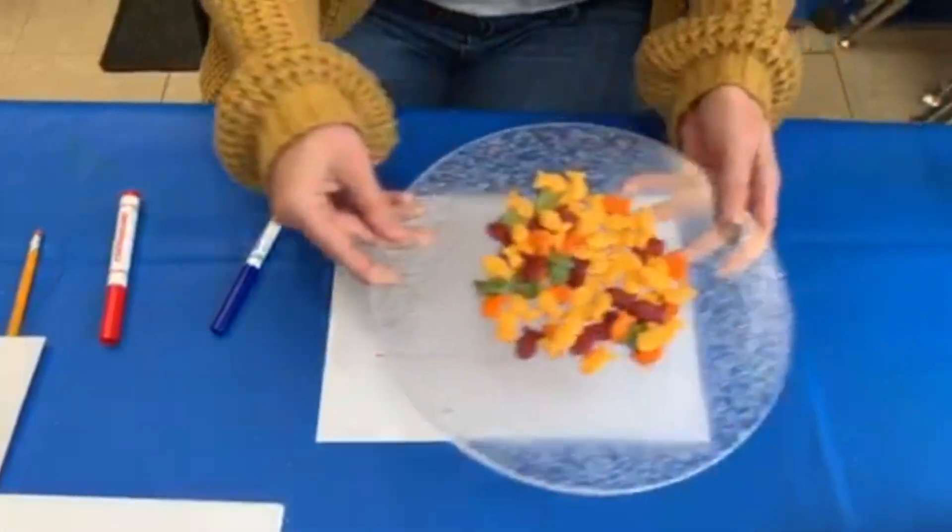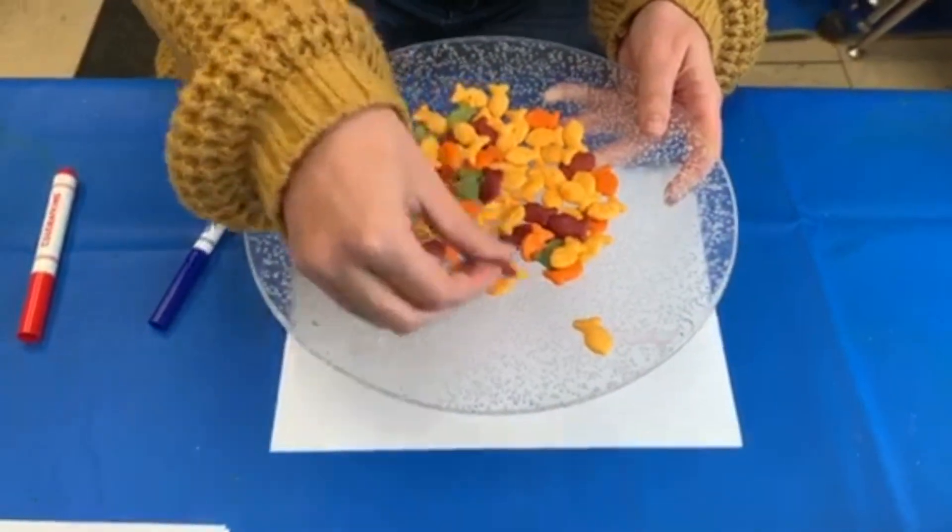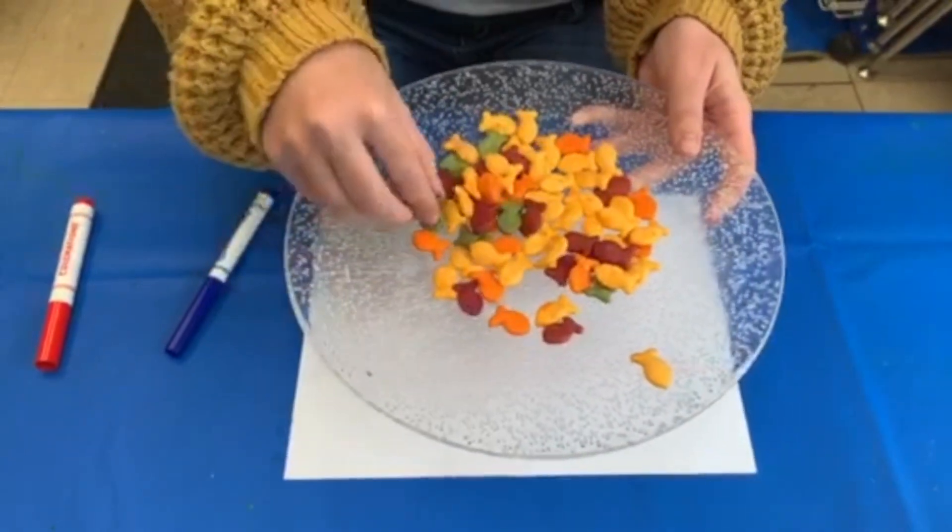Next, let's take our colored goldfish. Let's look at all the colors we have. We have yellow, red, orange, and green.